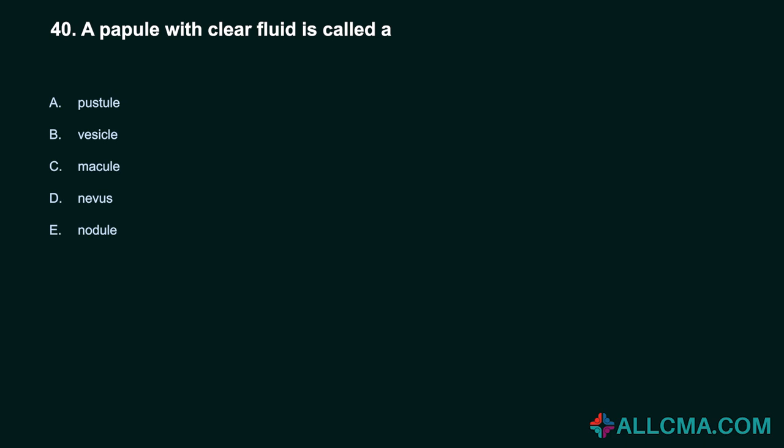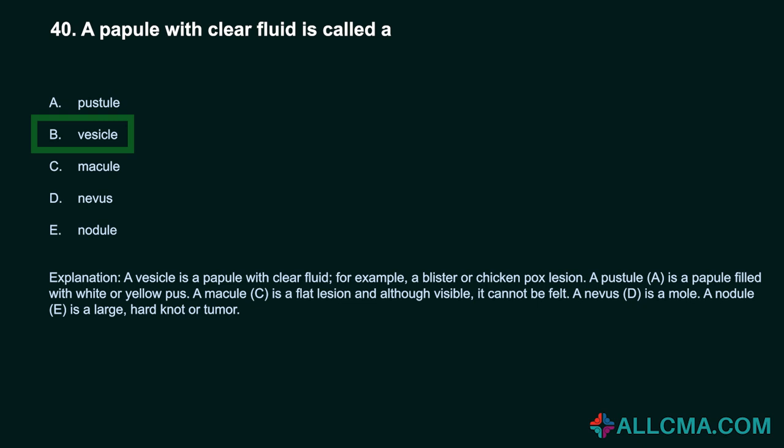Question 40: A papule with clear fluid is called: A. Pustule. B. Vesicle. C. Macule. D. Nevus. E. Nodule. Correct answer: B. Vesicle. A vesicle is a papule with clear fluid, for example a blister or chickenpox lesion. A pustule is a papule filled with white or yellow pus. A macule is a flat lesion that although visible cannot be felt. A nevus is a mole. A nodule is a large, hard knot or tumor.